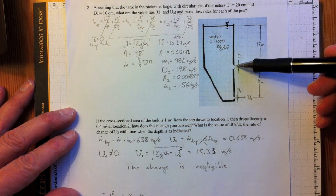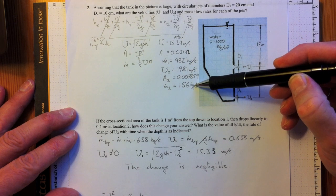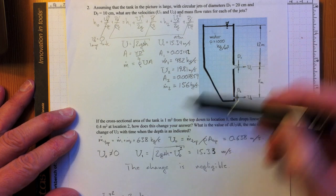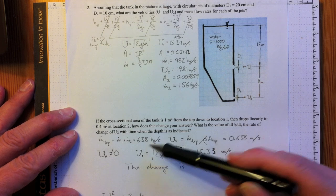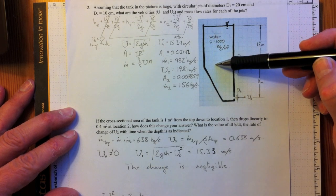Well, we know the total mass flow. It's 482 kilograms plus 156 kilograms per second is 638 kilograms per second. Is the mass flow moving down the tank?